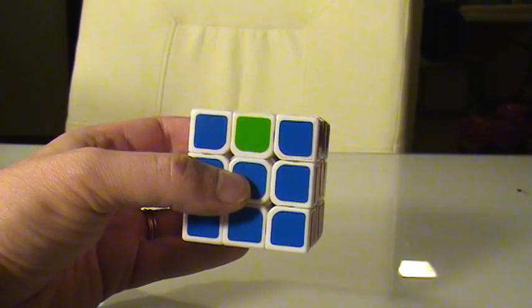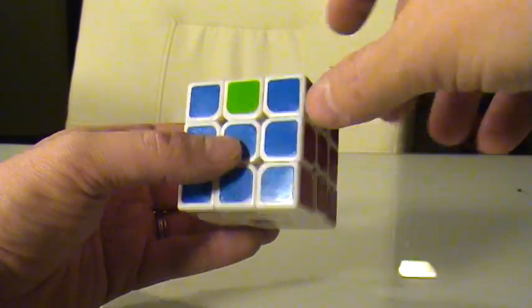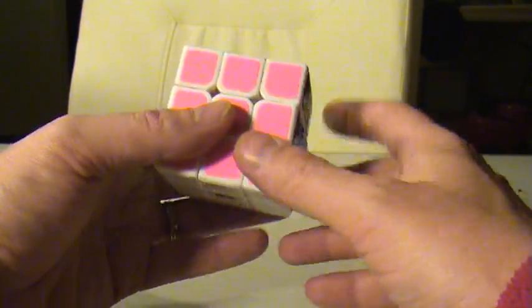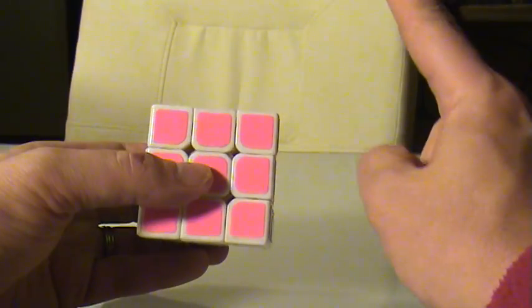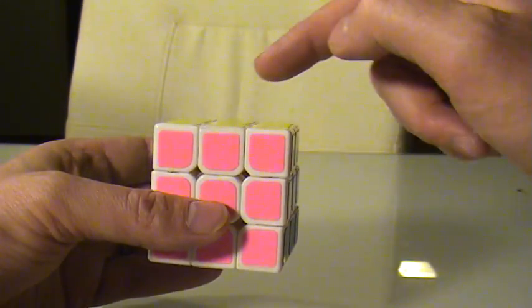So there are only a couple possibilities. Number one is all the edges are correct, and of course then you're done solving the cube. There's nothing to do. You may find that there are three edges that are incorrect, as I have, and then one edge which is correct. Or there are two other possibilities in which none of the edges are correct.